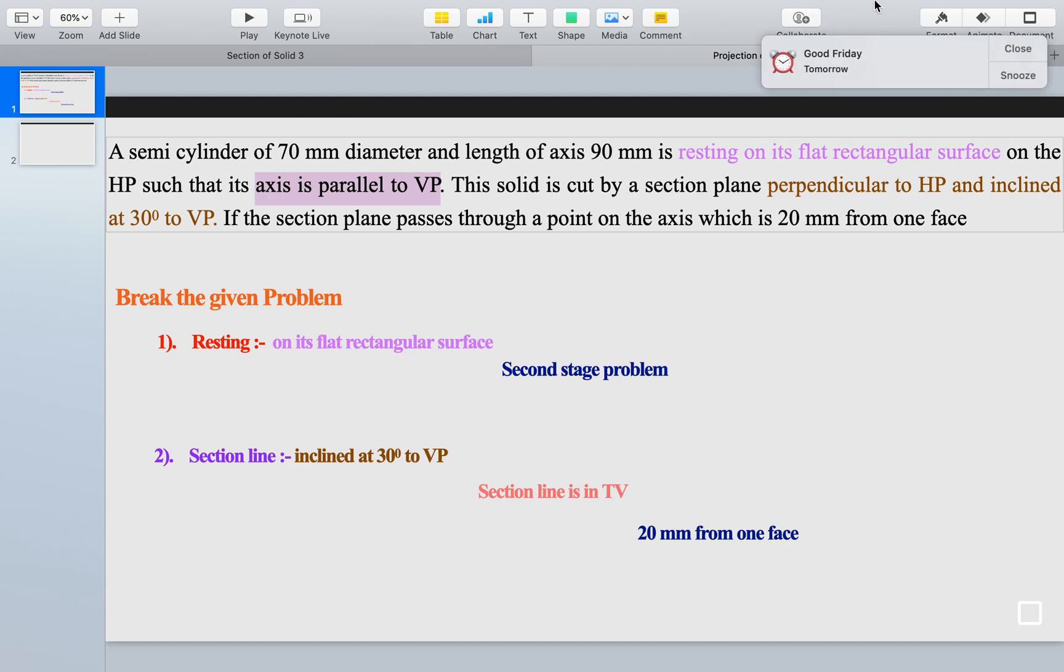Still, we have not completed our problem because this is a problem related to section of solids. We must know from where the section line is passing - from top view or is it belongs to top view or front view. We are required to check it. So the remaining portion of the question will give the idea.